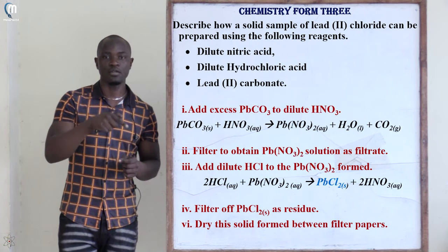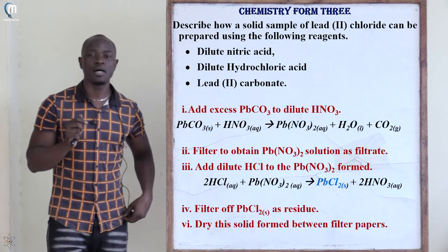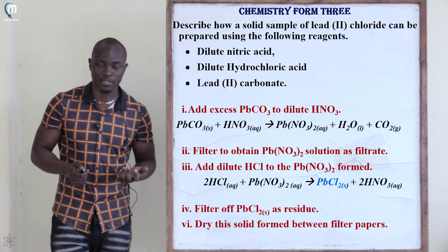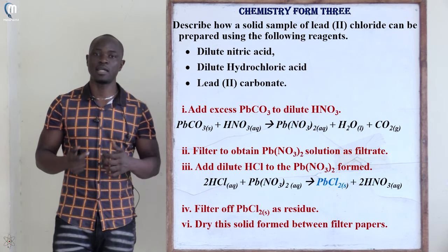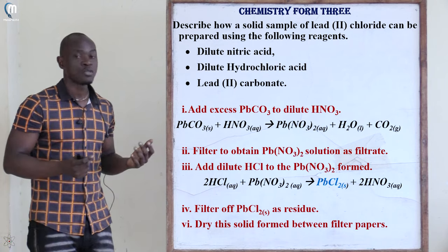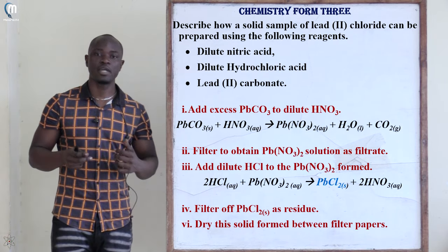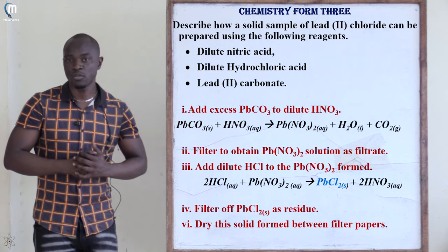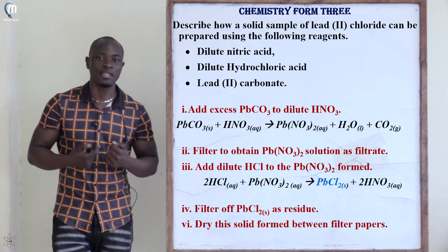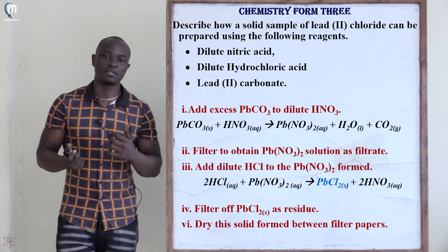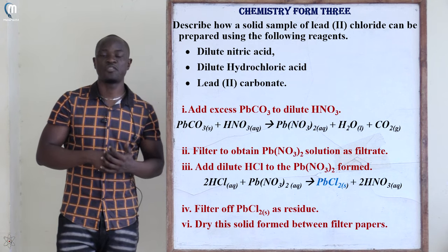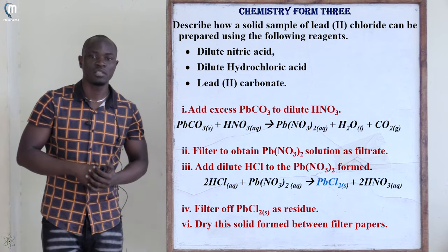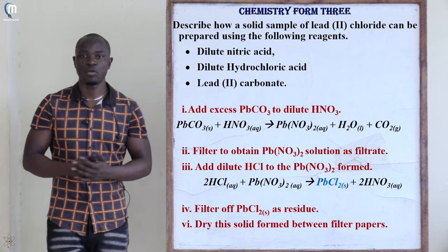The next step is to add dilute hydrochloric acid to the filtrate that was obtained. When the lead(II) carbonate reacted with nitric acid, we got the lead nitrate solution, and now adding dilute hydrochloric acid will give us the lead(II) chloride we need. The last step is again filtration — filter off the solid lead(II) chloride residue.